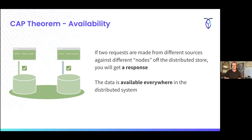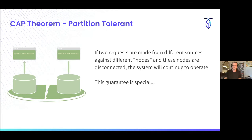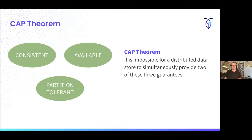Availability is a little bit easier. If requests are made against two different nodes in the distributed system, you're going to get a response. That response isn't guaranteed to be correct — you may get different answers — but you're going to get a response. Basically the data is available everywhere within that distributed system. Then there's partition tolerance: if there's a disconnection between parts of the system, you're still able to survive that. The CAP theorem states it's impossible to have all three, and you can only provide two.